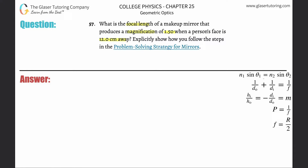It tells us the magnification of the mirror, so M is going to be equal to 1.5. It also tells us the person's face is going to be 12 centimeters away, so that would be the distance of the object. The person's face is the object — it's 12 centimeters away. Just convert this to meters: 0.12 meters.